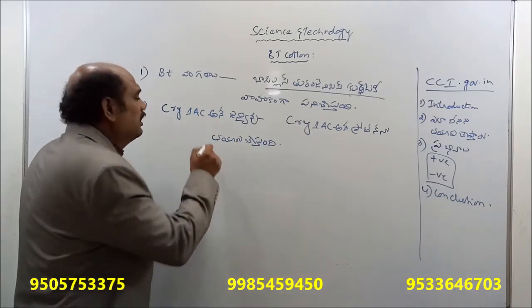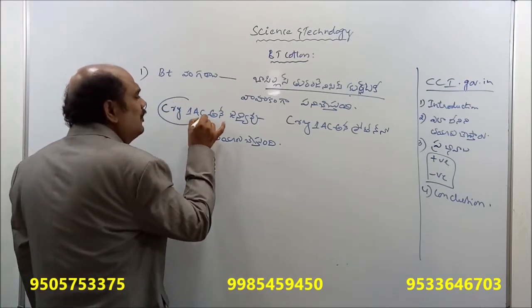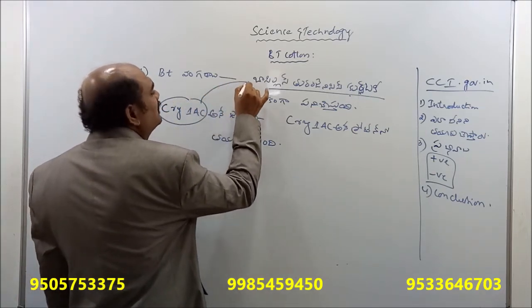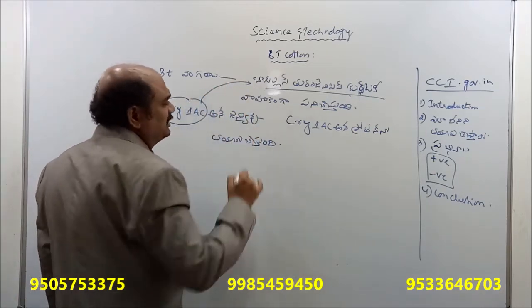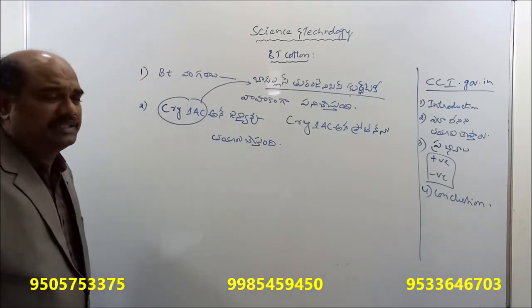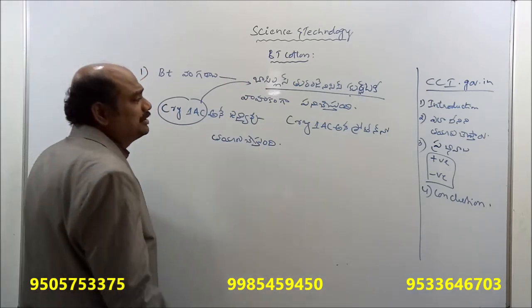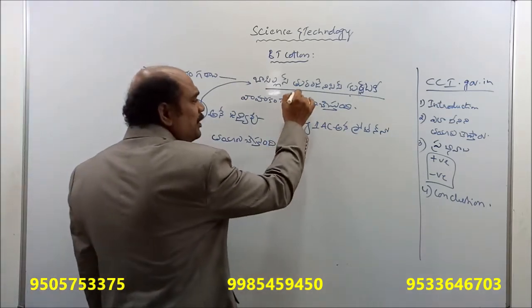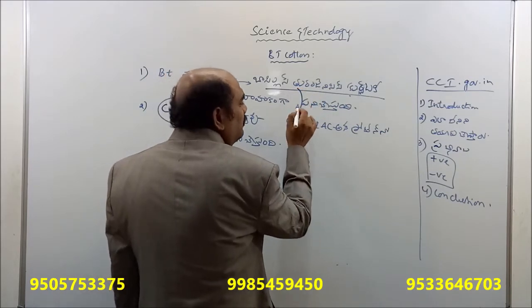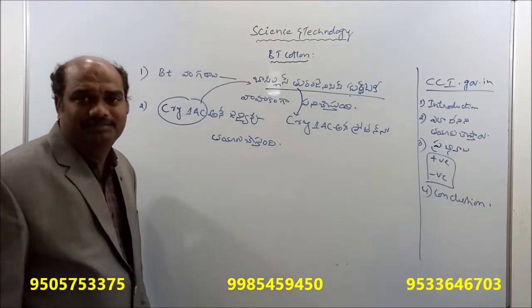The target of Crystal 1Ac and A genes is Bacillus thuringiensis. Crystal 1Ac and A genes act on the Bacillus thuringiensis mechanism, and the Crystal 1Ac and A genes are specifically inserted to confer resistance.